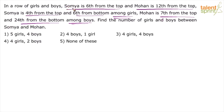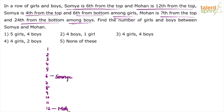Let us use the first point. Swamya is 6th from top, so in the ranking 1, 2, 3, 4, 5, the 6th will be Swamya. And Mohan is 12th from top — so 7th, 8th, 9th, 10th, 11th, and 12th — this would be Mohan. So Swamya is 6th from top and Mohan is 12th from top. How many positions are there between Swamya and Mohan? Only 5 positions: 7th, 8th, 9th, 10th, 11th.